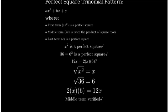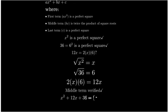Since our expression is a perfect square trinomial, we can factor it as a binomial squared. The binomial will be x plus 6, and we square the entire expression.